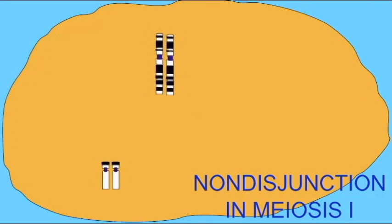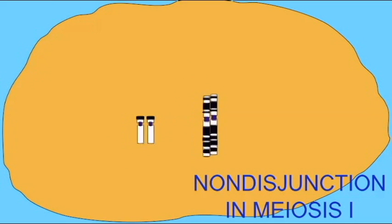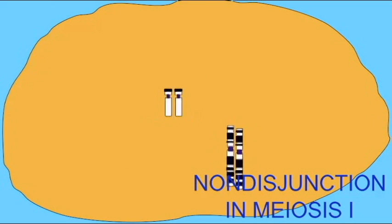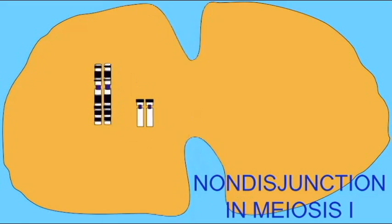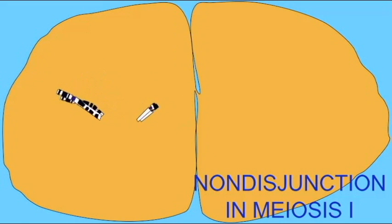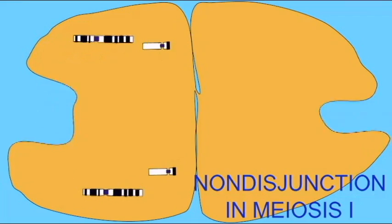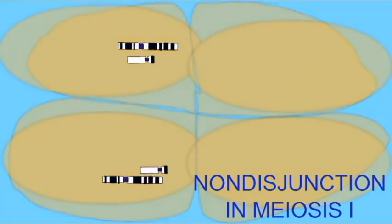If a non-disjunction occurs during spermatogenesis where the chromosomes do not assort properly, if this occurs during meiosis I during spermatogenesis, then all four gametes will possess abnormal numbers of chromosomes.